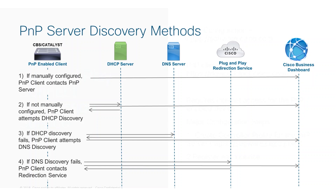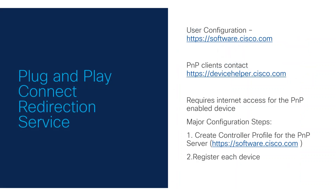If DNS Discovery is also unsuccessful, the PNP client will reach out to the PNP Connect Redirection Services. This is when the device goes online to find directions to the server. Therefore, the PNP client must have internet access. You need to create a controller profile for the PNP server on software.cisco.com. Then, each device must be registered. The PNP client will then attempt to connect to devicehelper.cisco.com.